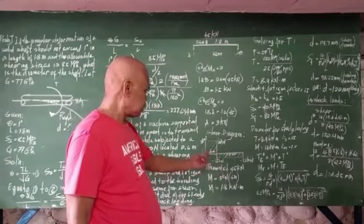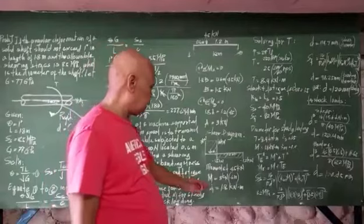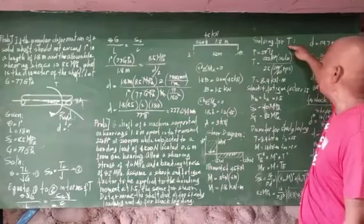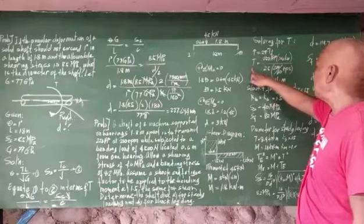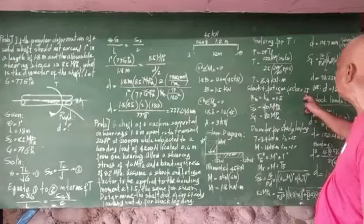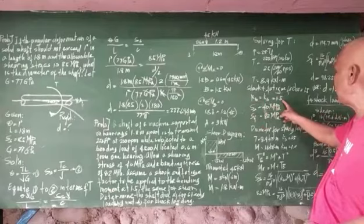The maximum bending moment is equal to 1.8 kilo newton meters. Solving for the torque, which is taken from the power transmitted, T is equal to 8.9 kilo newton meters. For the fatigue factor of 1.5, Km is equal to Ks, which is equal to 1.5.